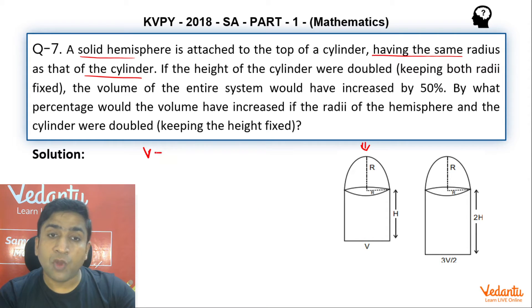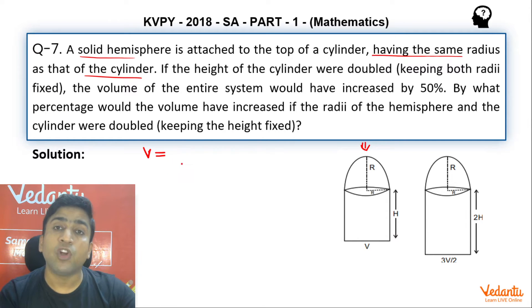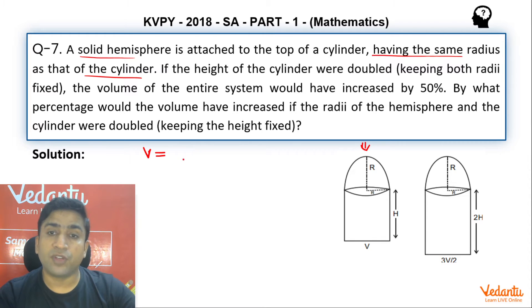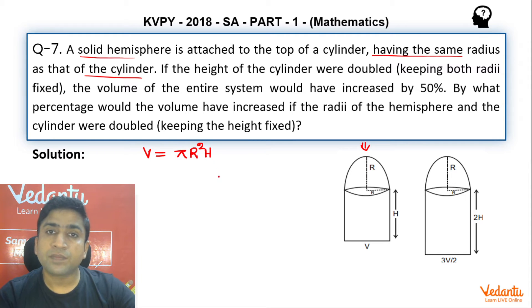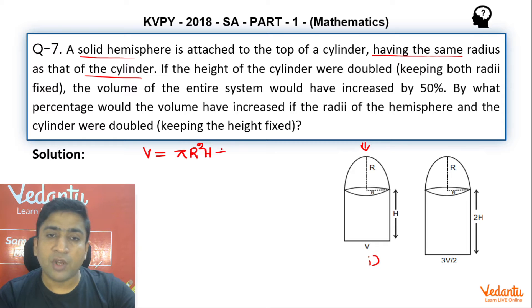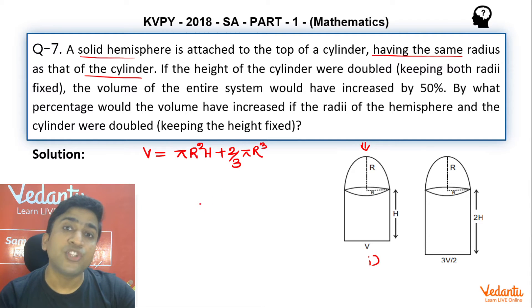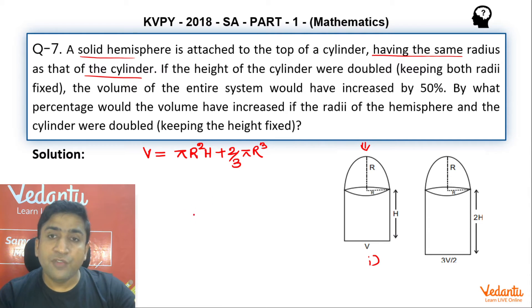The volume of this shape is the volume of the cylinder plus the volume of the hemisphere. So the volume of the cylinder is πr²h, and the volume of the hemisphere is (2/3)πr³. This is going to be the original volume V.